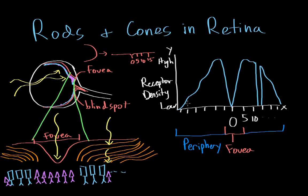Cones have a different distribution — there aren't very many in the periphery, but at the fovea there's a huge spike in cone numbers. Moving away from the fovea, cones drop back down. At the blind spot there are no photoreceptors, and on the other side of the blind spot there is a very low number of photoreceptors.